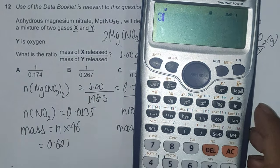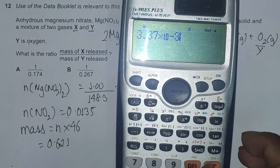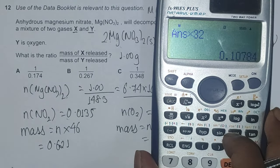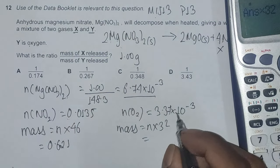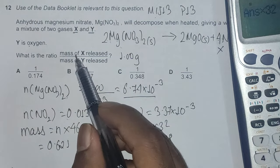Now we have a ratio of mass of nitrogen dioxide, which is 0.621, divided by mass of oxygen 0.108.